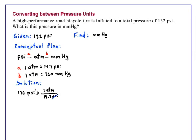PSI's cancel and we now apply our second relationship that says that there are 760 millimeters of mercury in an atmosphere.